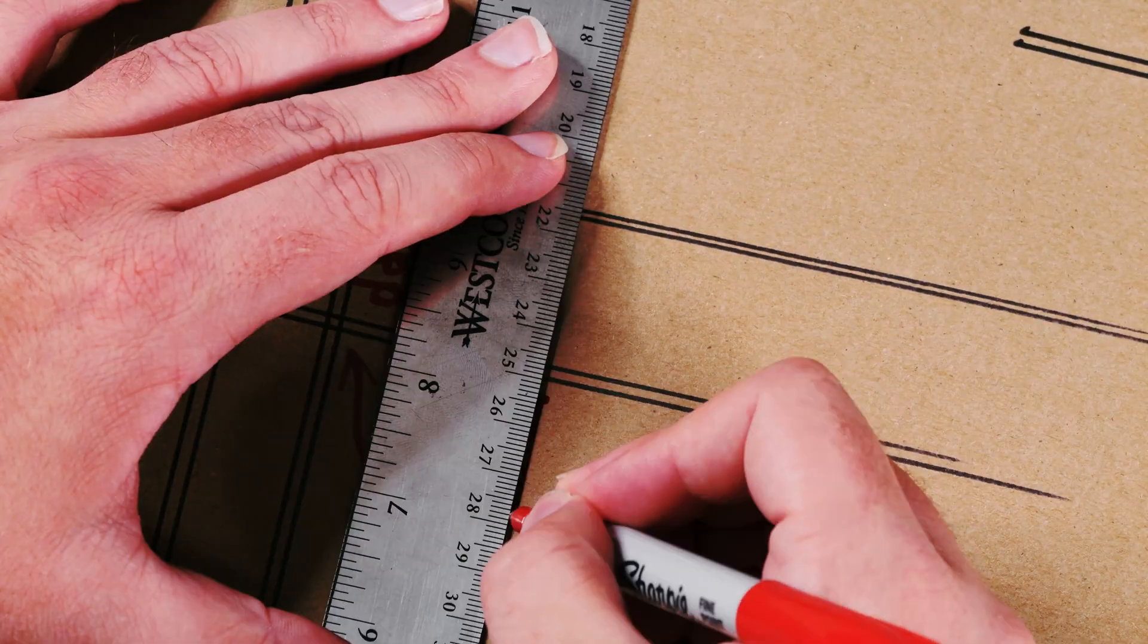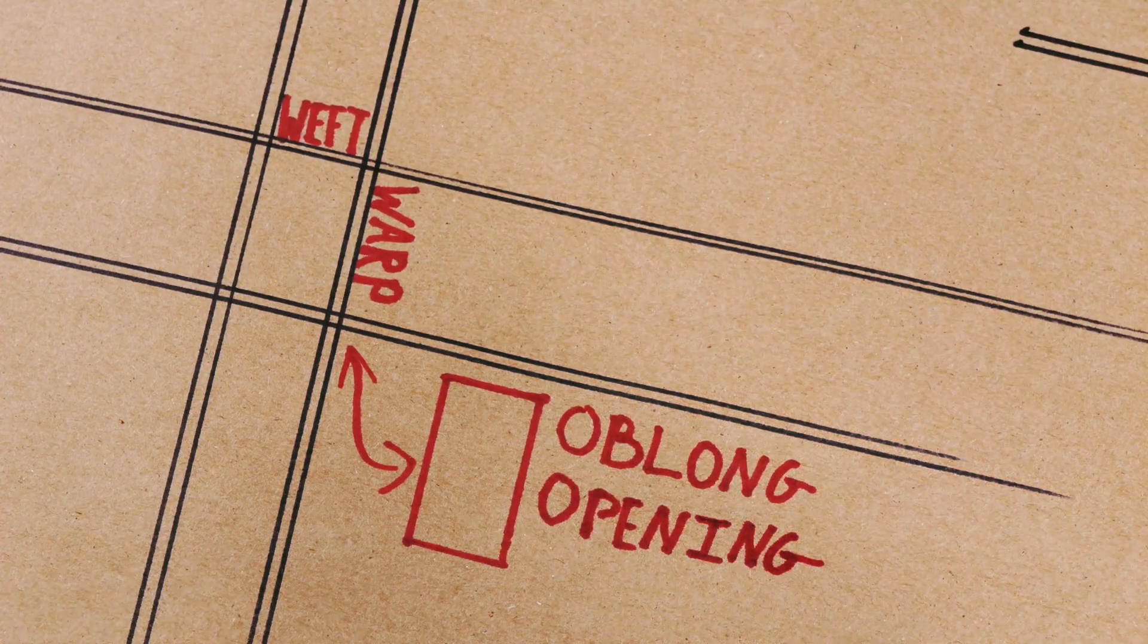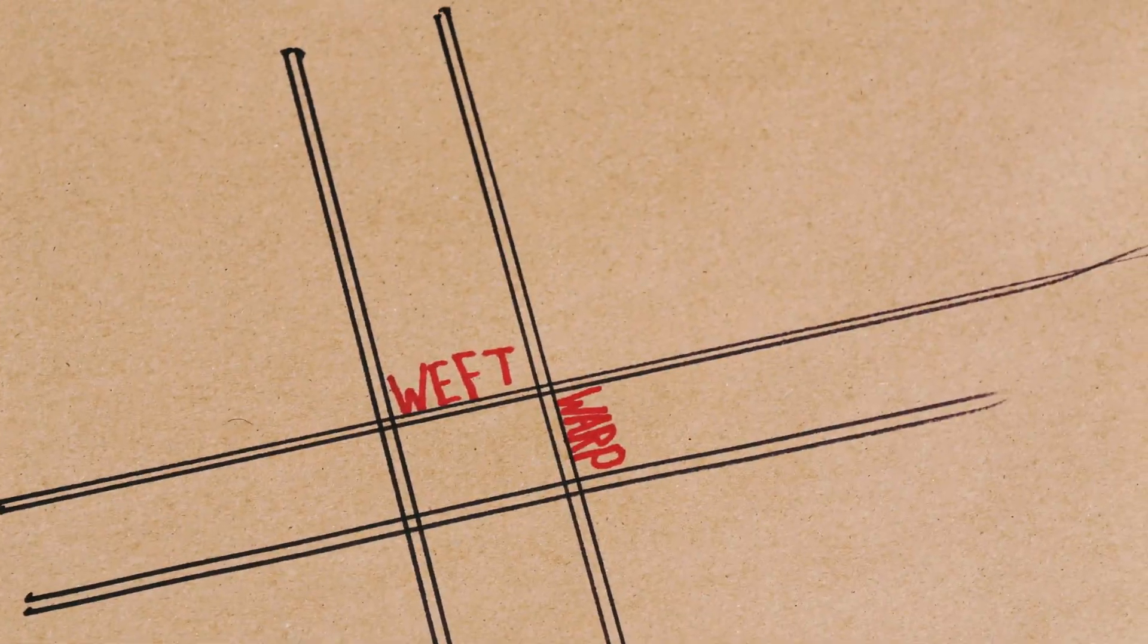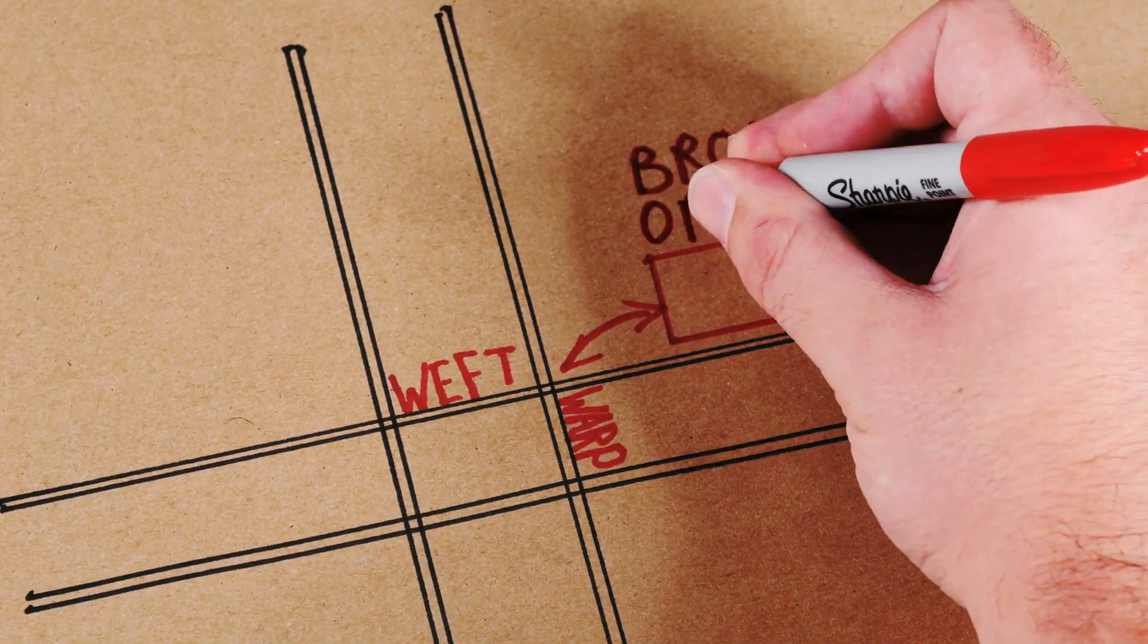Then there's the rectangular openings. If the opening is longer than it is wide, then it's called oblong. If the opening is wider than it is long, then it's called broad.